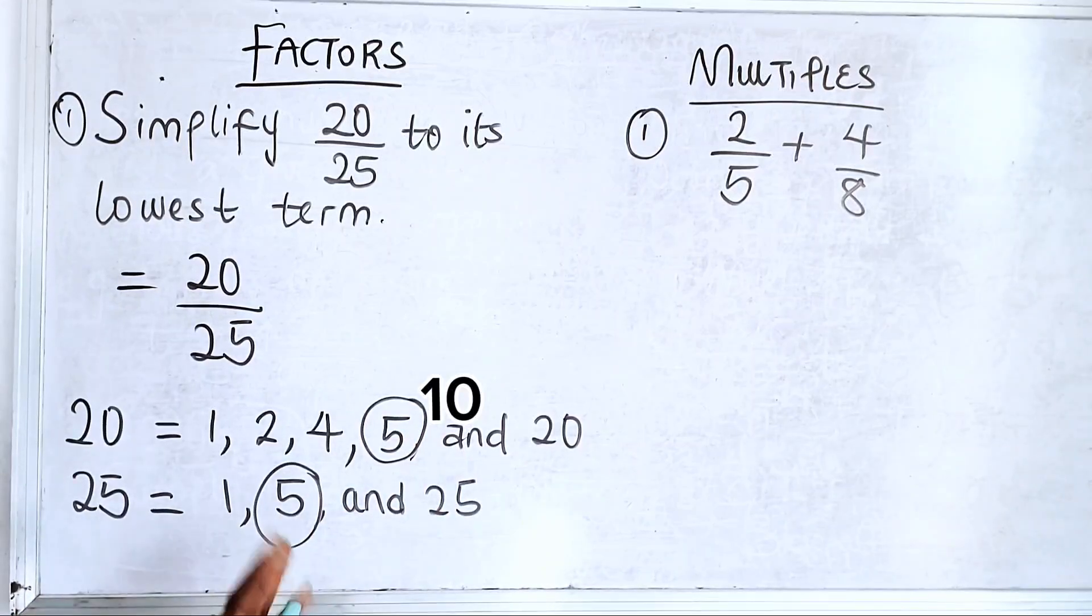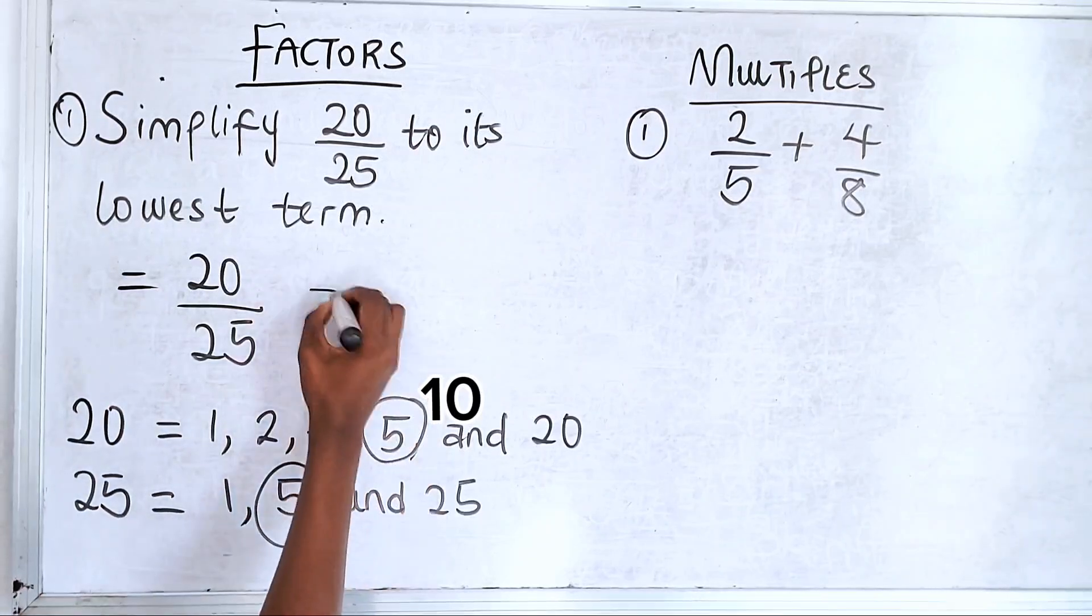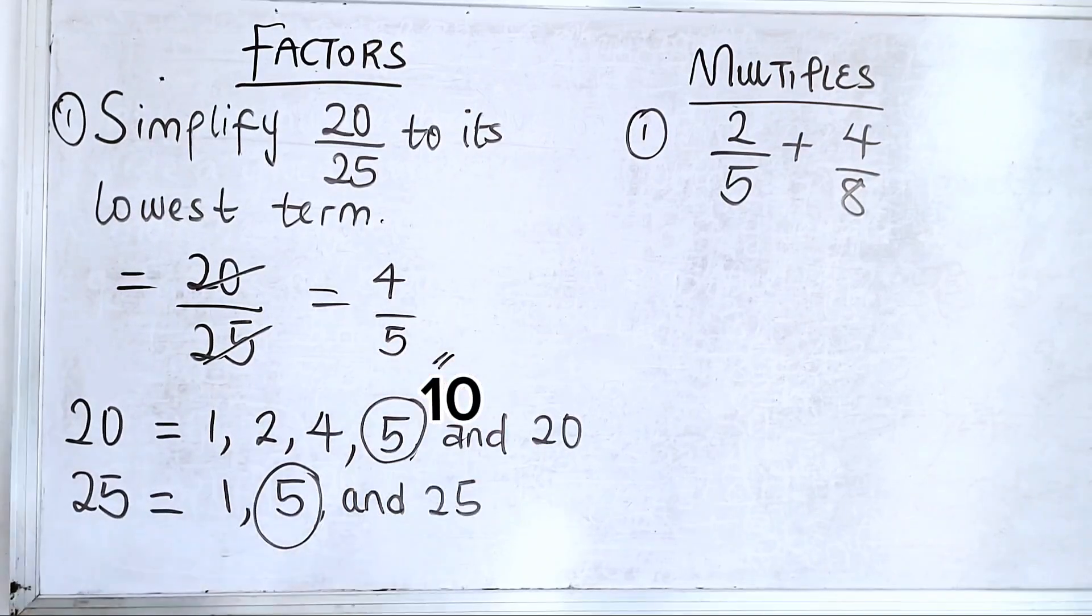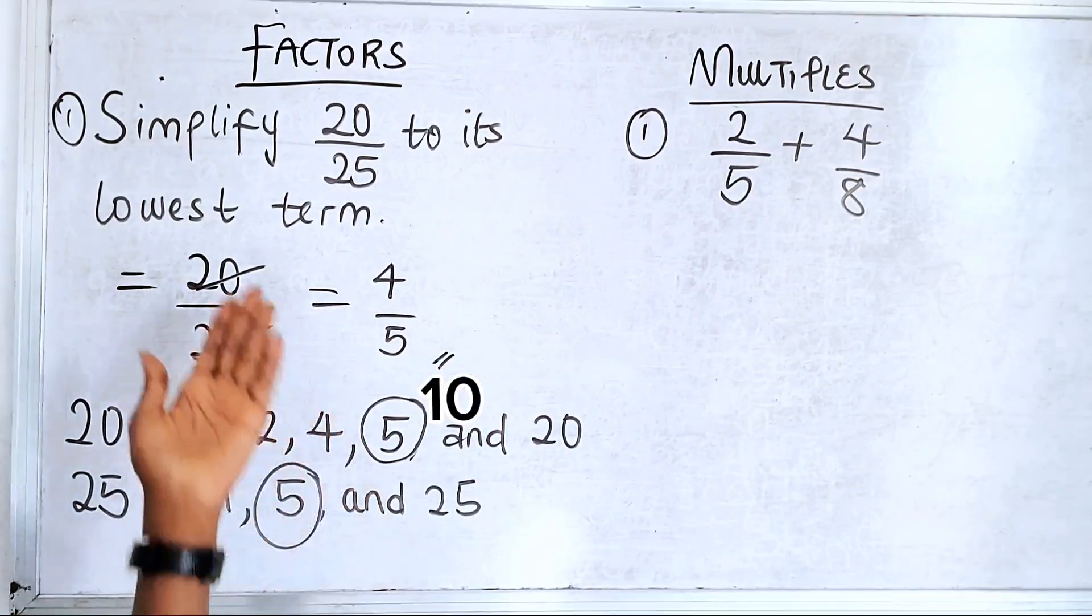So you see that now you know that 5 can go in 20 and also going 25, which is the highest value. So 5 here is 4, 5 here is 5. And this gives you the answer to this kind of question.